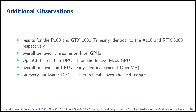Additional observations not shown directly: results on the NVIDIA P100 and GTX 1080 Ti were virtually identical to the A100 and RTX 3080. The overall behavior on Intel GPUs was the same as on NVIDIA GPUs, though OpenCL was dramatically faster than DPC++ on the Iris Xe Max GPU. CPU behavior was nearly identical across platforms. On every hardware platform investigated, the DPC++ hierarchical kernel formulation was strictly slower than its ND-range counterpart, showing DPC++ still has potential to optimize its hierarchical kernel invocation.